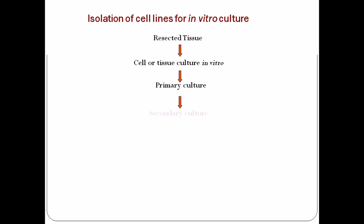After the primary culture, we do the secondary culture. Secondary culture is termed only after subculturing the cell. Once the cell completely grows onto the surface of the media and can no longer grow due to the depletion of all the nutrients, we take that cell from that media and put it into another fresh media. That process is called subculturing, and after one subculture we get what is called the secondary culture.